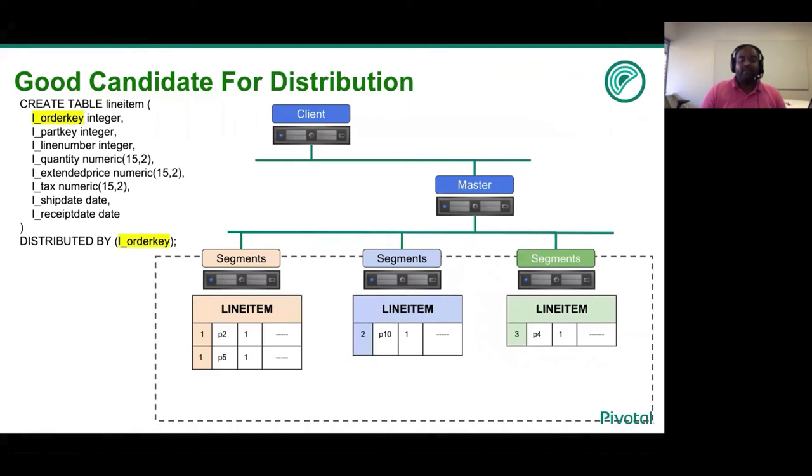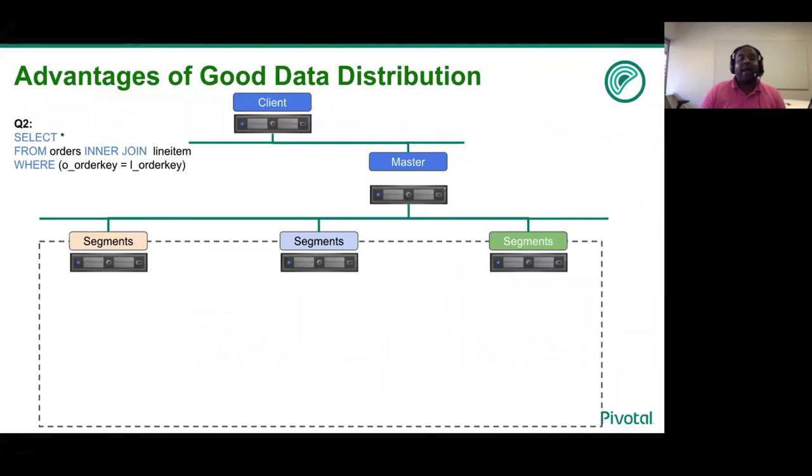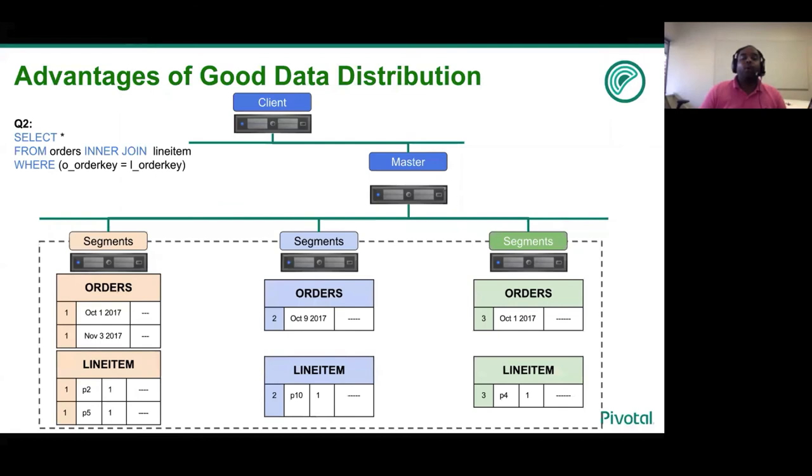Now what is the advantage of having this distribution policy of line item? Typically, a user wants to see all of the orders and its corresponding line item. This translates to an inner join with the join condition as order key of orders table equal to order key of line item table. If he had picked both line item and orders to be distributed on order key, what we will see is all of the orders and line items that have the same order key value will be co-located.